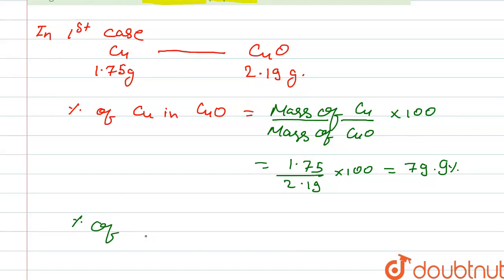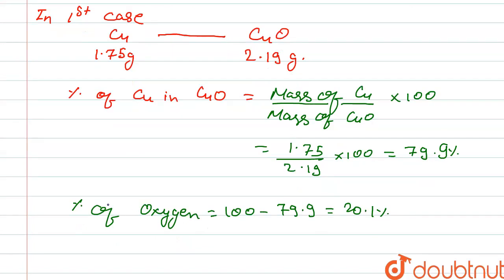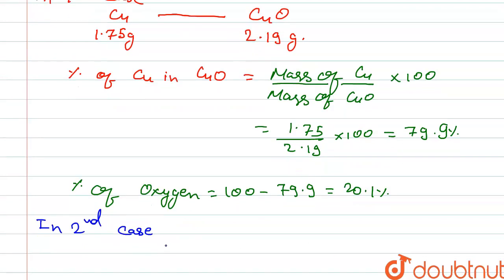The percentage of oxygen in the first case is 100 minus 79.9 percent, which gives us 20.1 percent. Next, in the second case: